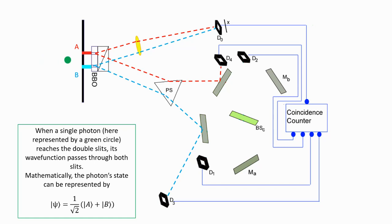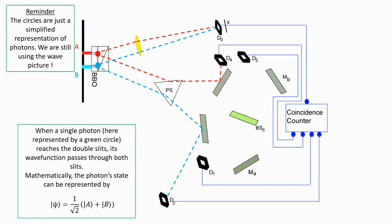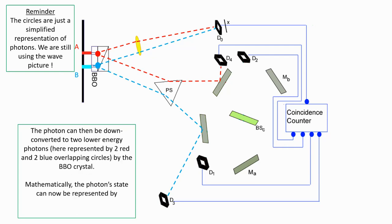The state of the photon can be written as... Here is a reminder, we are still using the wave picture. The circles are just a simplified representation of the photon.